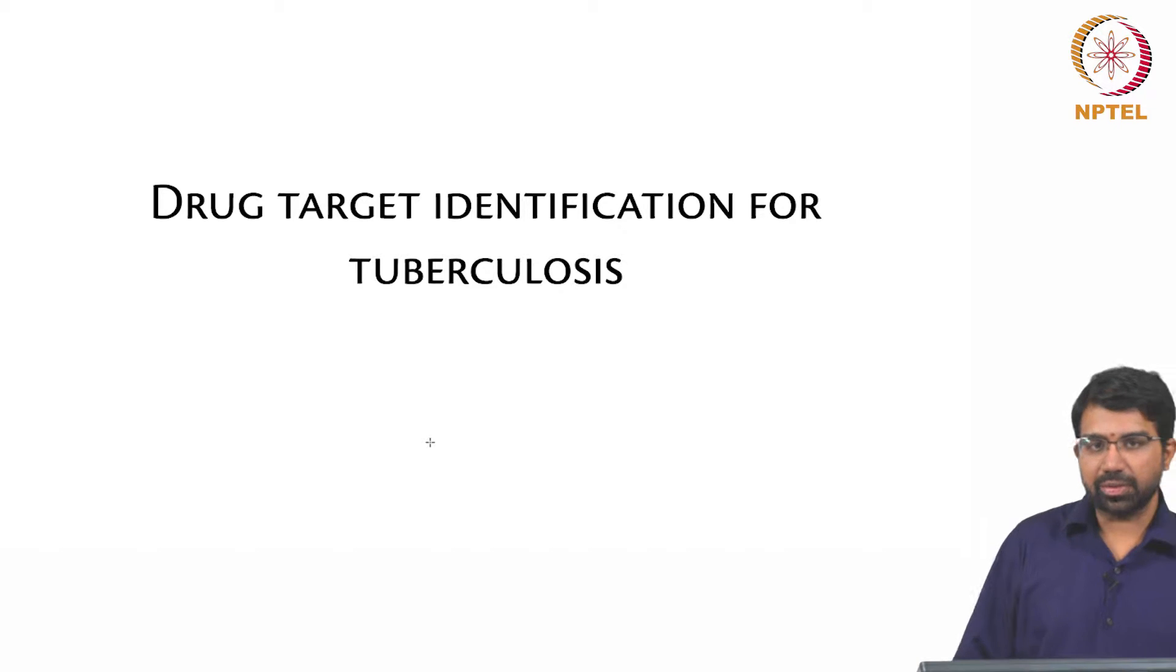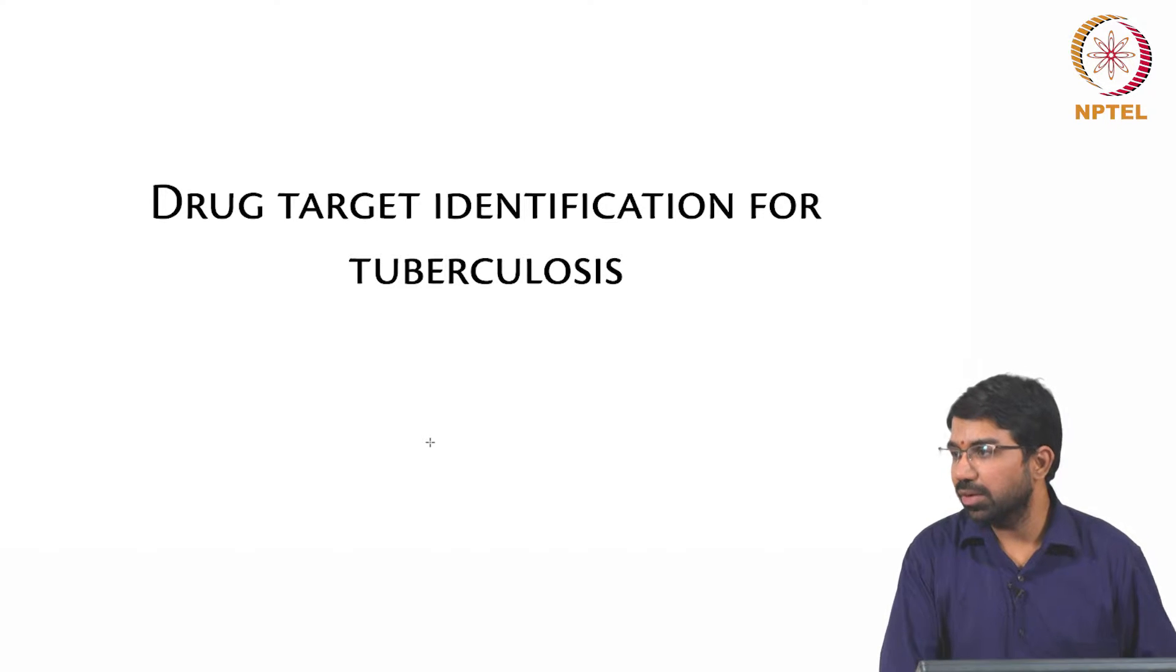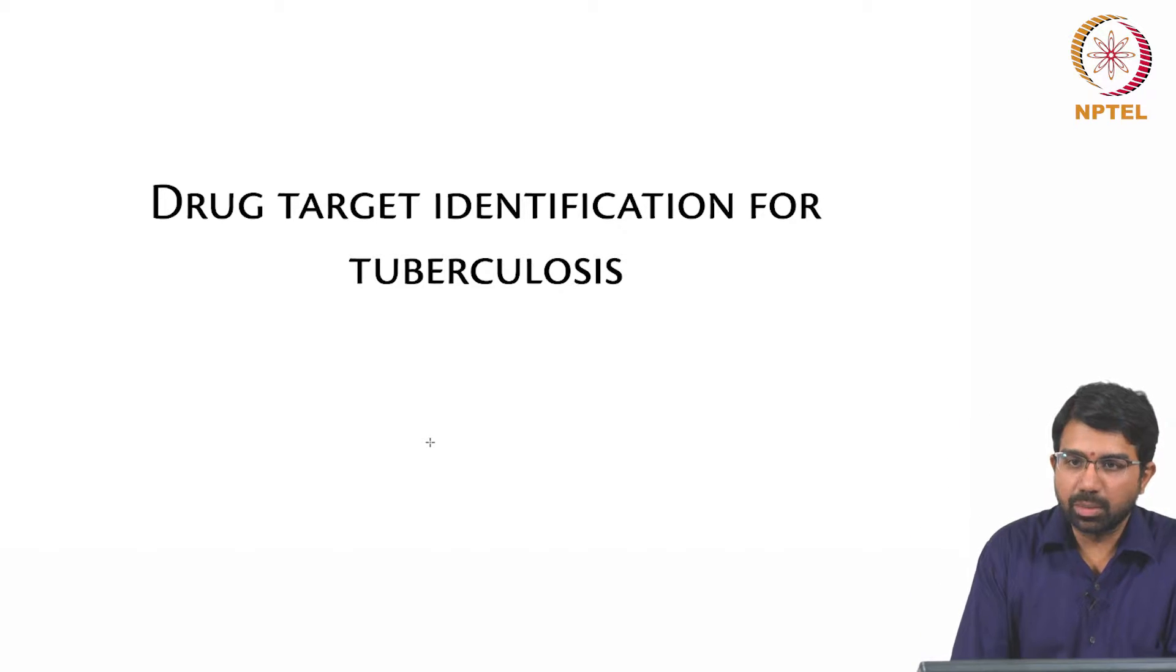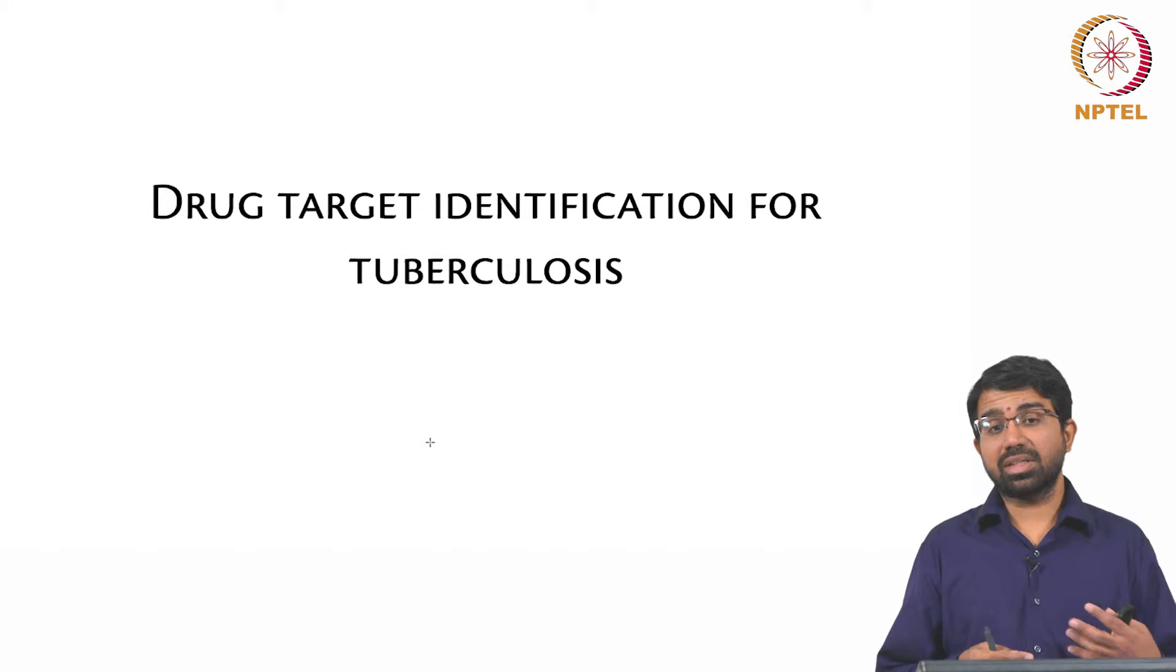So let us see how we identify drug targets for tuberculosis. How would you start any of these modelling exercises? You need to essentially figure out what is the goal of the modelling. If I am trying to target tuberculosis, the obvious idea would be to try and knock out the TB metabolism, or identify proteins that when inhibited will stop TB from growing or will actually kill it.